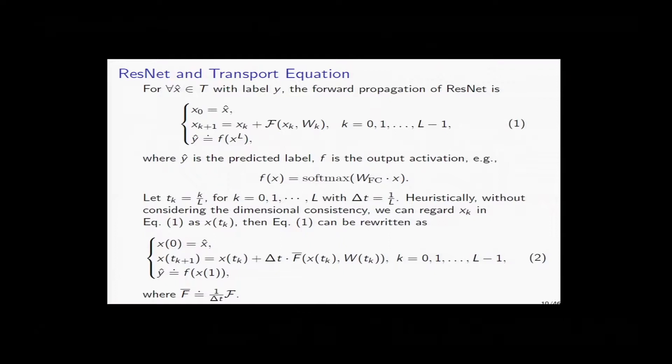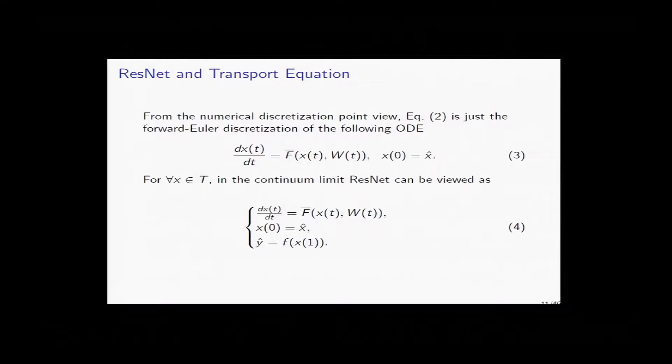ResNet goes as follows. For any x_hat with label y, you propagate by x_k+1 = x_k + f(x_k, w_k). At the end, you get the predicted label using softmax. You can regard x_k as x at time t. This was a new notion when this was done by He. Once that happens, a lot of things open up related to differential equations. These f's are complicated functions you use to create the architecture.